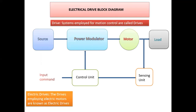The control unit takes an input command, and its output goes to the power modulator. This is an example of an electrical drive kit — a device or converter that controls the motor speed. That is called an electrical drive.